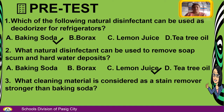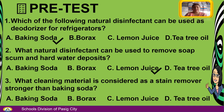Number 3. What cleaning material is considered a stain remover stronger than baking soda? A. Baking soda. B. Borax. C. Lemon juice. D. Tea tree oil. The answer is B — Borax.